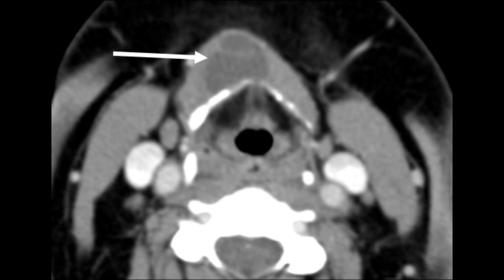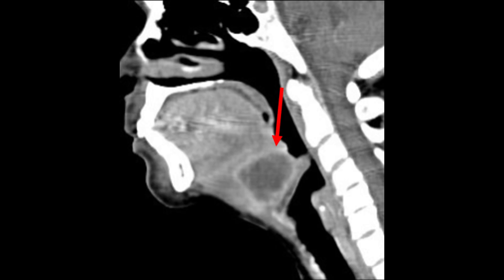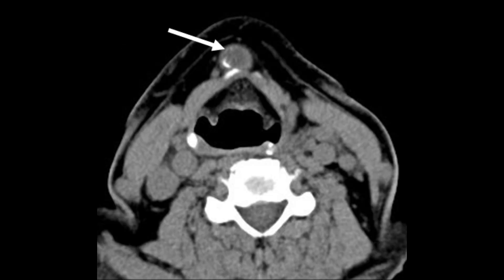Thyroglossal duct cysts may also appear paramedian, especially when trapped between strap muscles, but they are never truly lateral. If you encounter a cystic lesion away from the midline, consider an alternative diagnosis. Typically, the cyst wall shows no enhancement or only minimal enhancement after contrast. When infected, enhancement becomes more pronounced. If you see internal solid nodules or calcifications, consider the possibility of malignant transformation.